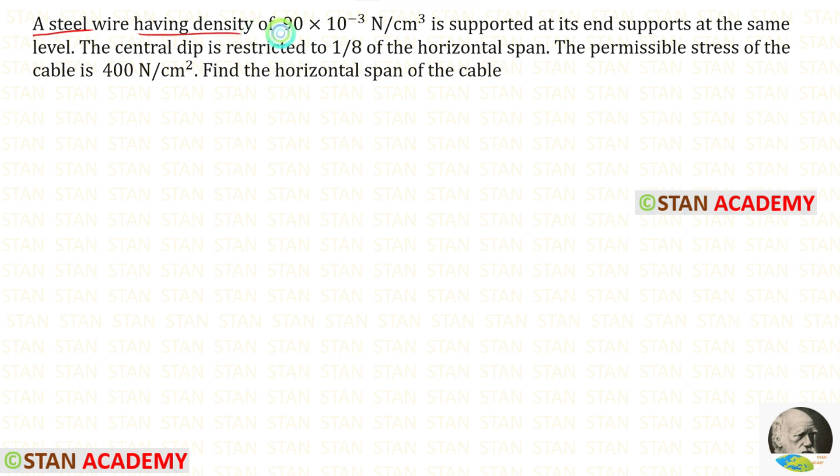A steel wire having density of 90 × 10^-3 Newton per centimeter cube is supported at its end supports at the same level.